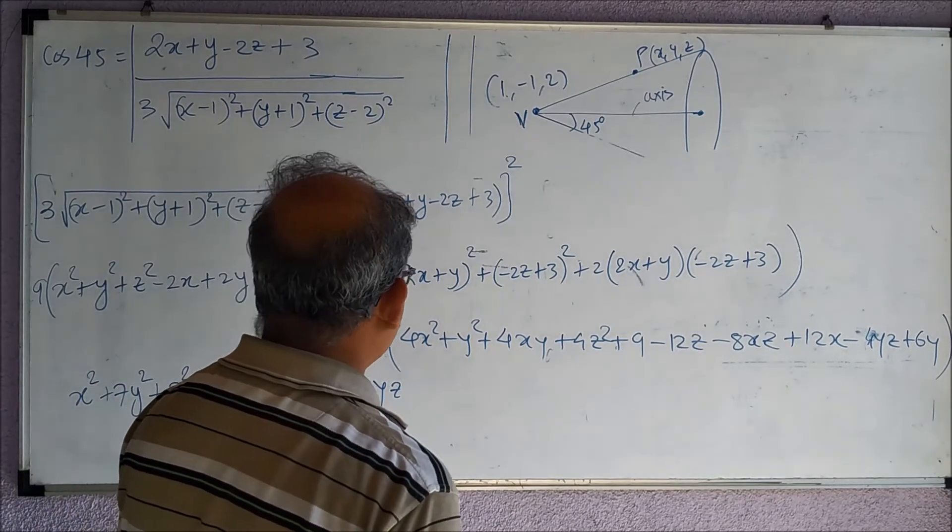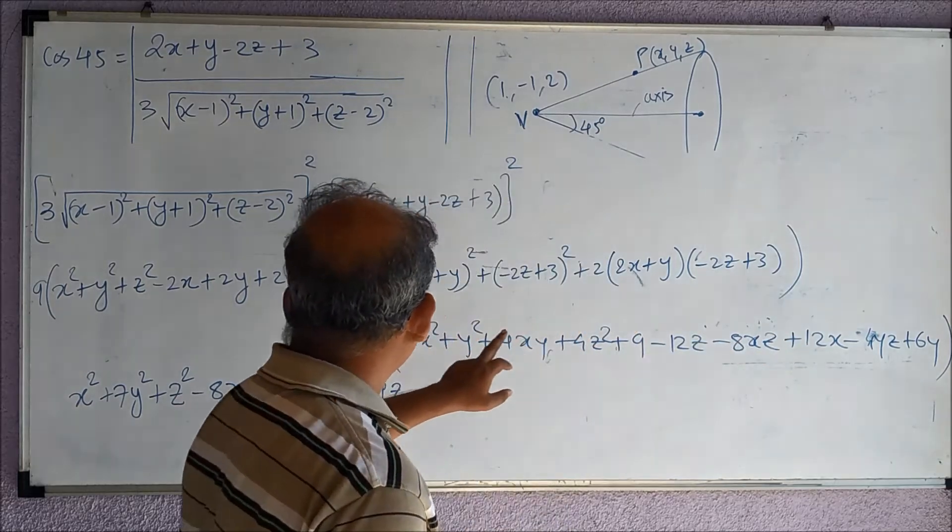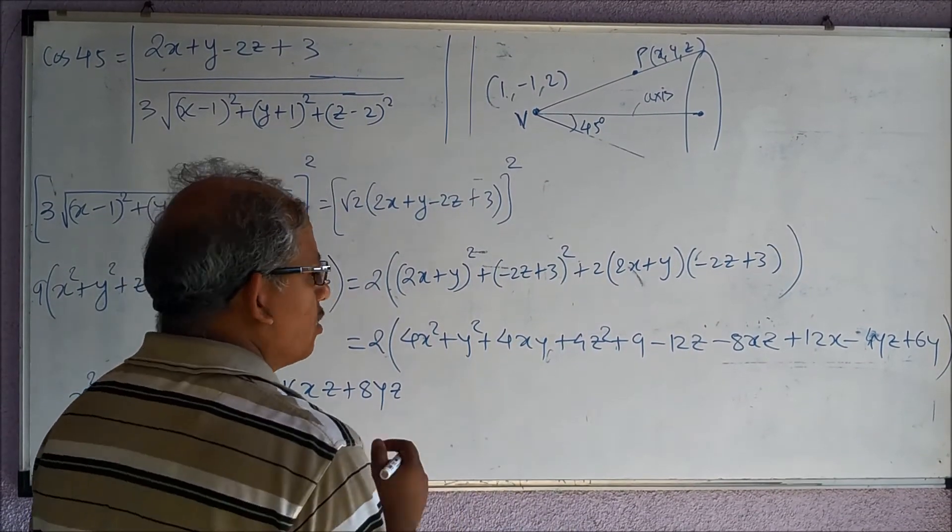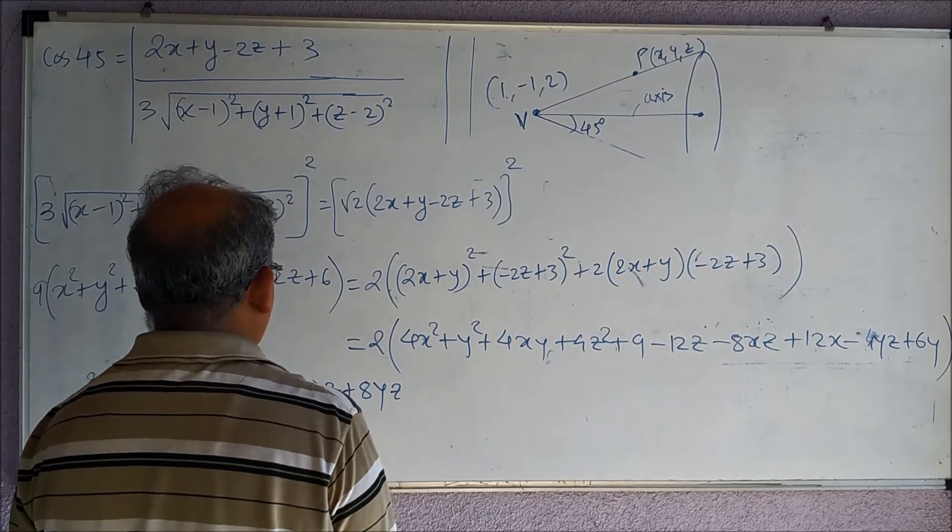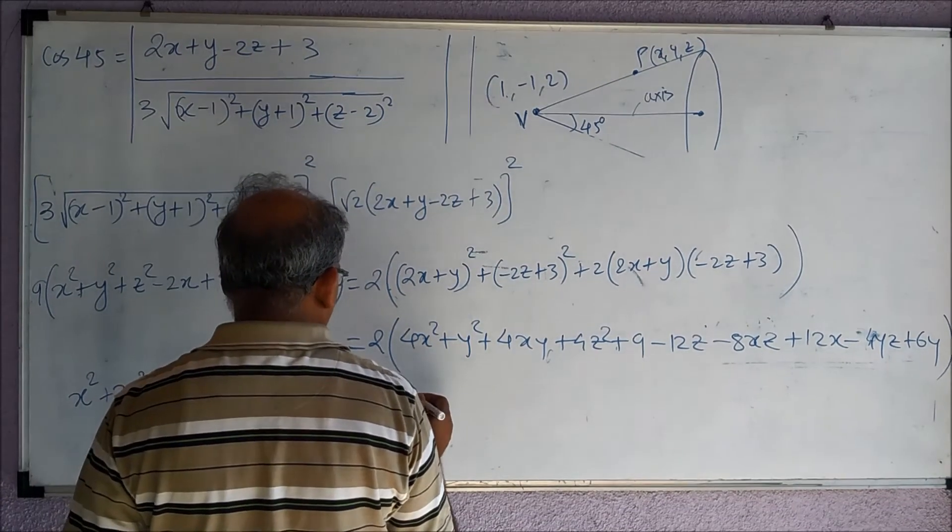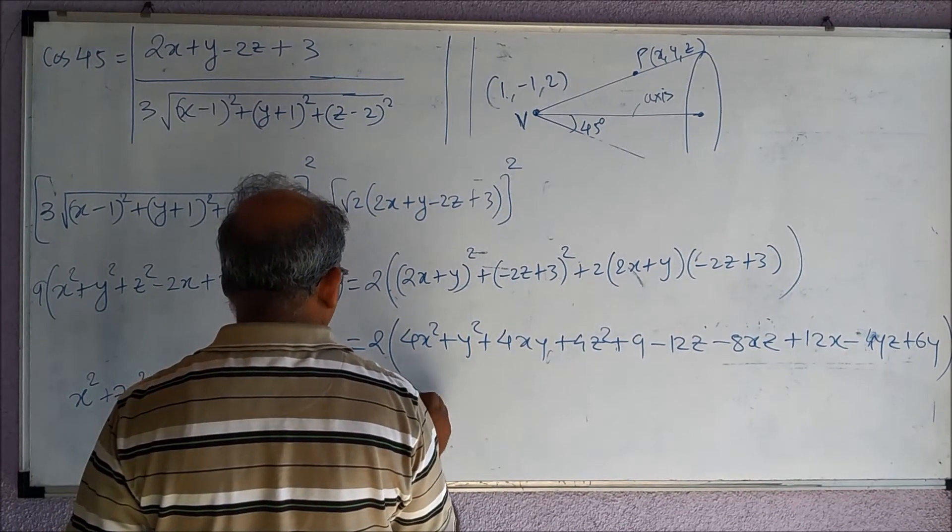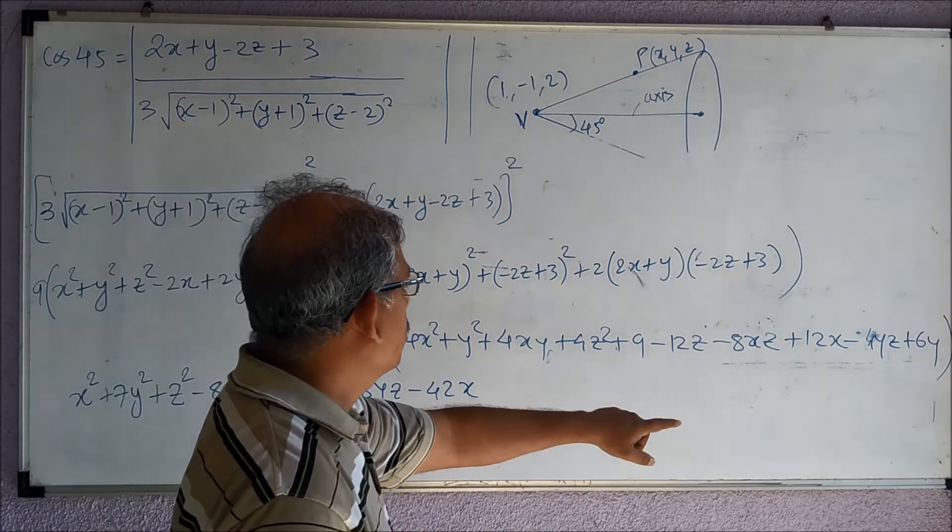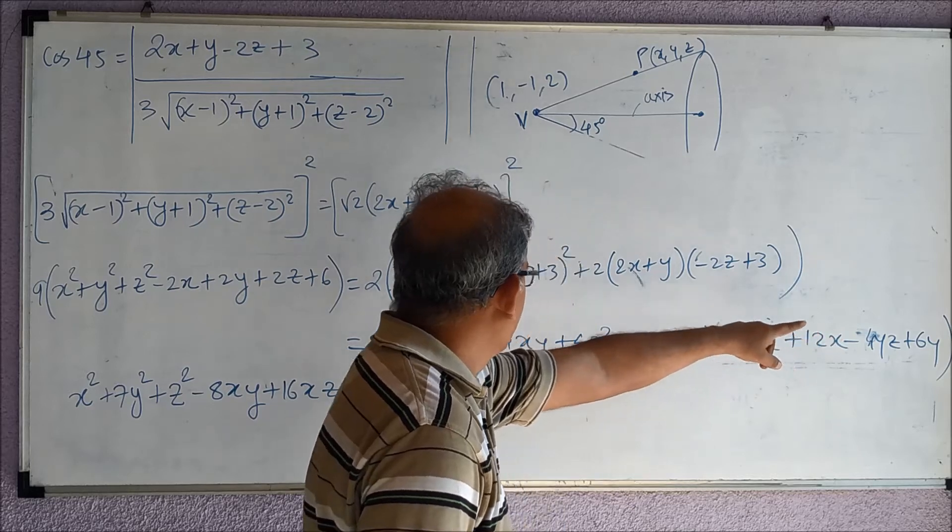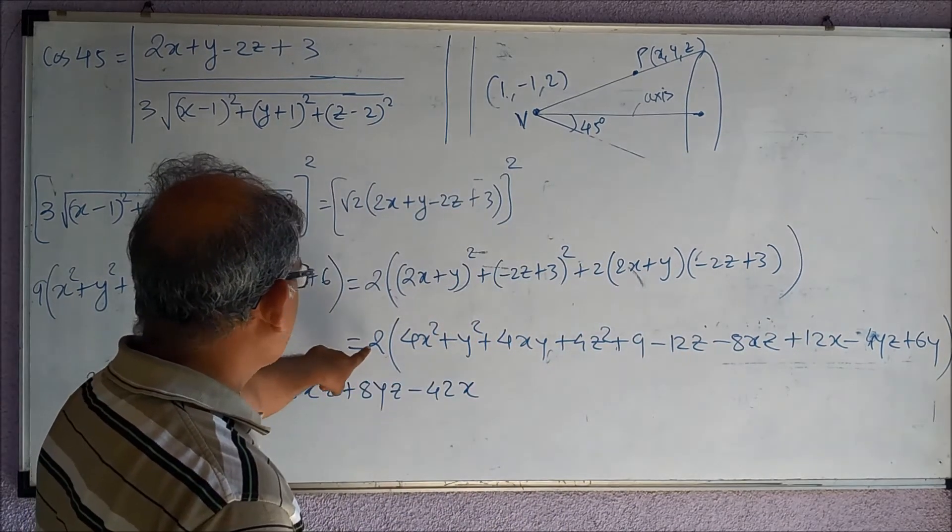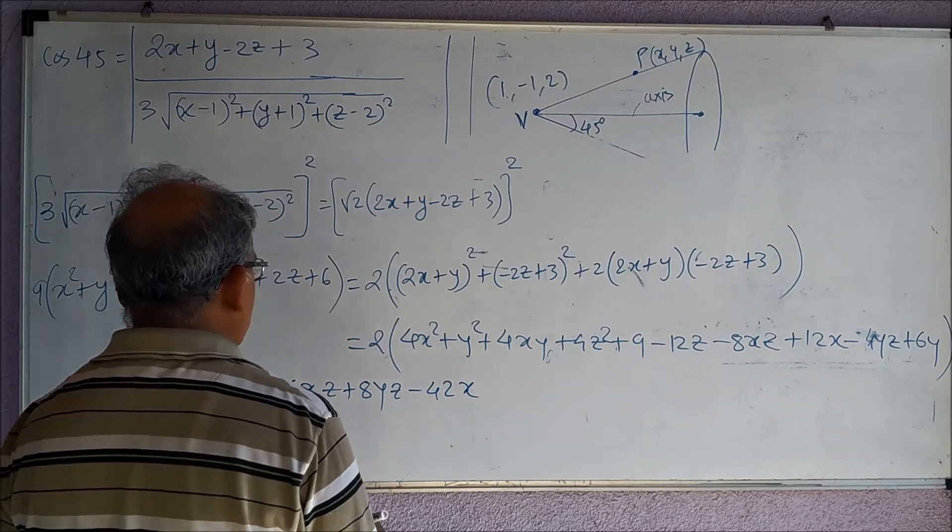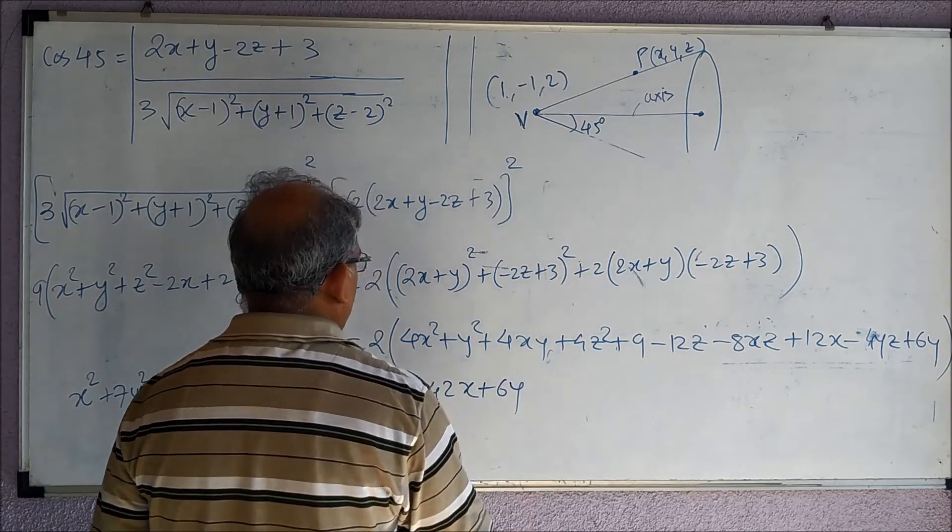Now the terms of x, y, and z. So here there is 24x, here there is -18x, so 24 and 18, so minus 42x. Then this will be y, so 6y, 12y on this side, minus 12y, so 6y.